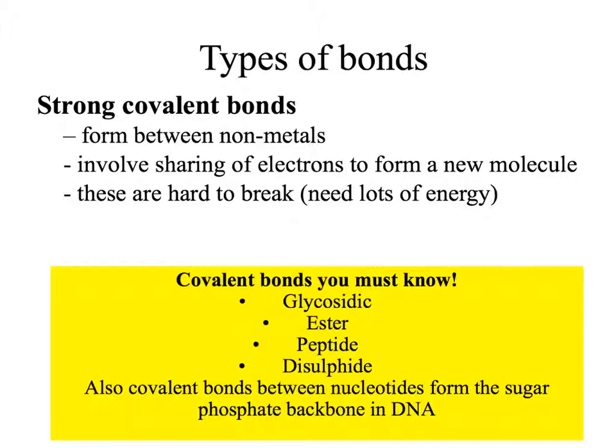Covalent bonds that you must know the names of are: glycosidic bonds between two carbohydrates; ester bonds between a fatty acid and a glycerol; a peptide bond between two amino acids; a disulfide bridge found in the tertiary structure of a protein; and covalent bonds formed between the nucleotides in the sugar phosphate backbone of DNA.